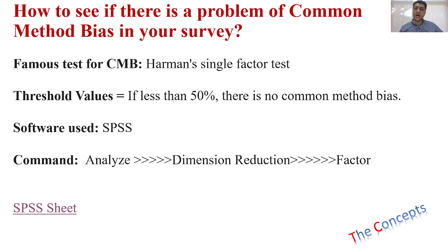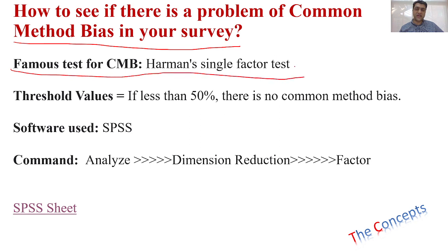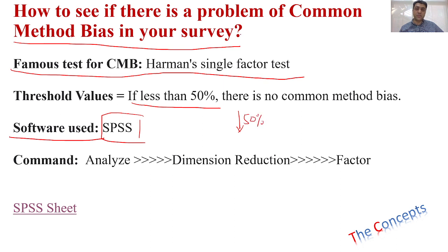To check for common method bias in survey-based data, the most famous test is Harman's single factor test, performed using SPSS. The threshold value to remember is that the percentage of variance should be less than 50%. If it is less than 50%, there is no problem of common method bias; if it is above 50%, there is a problem. In SPSS, go to Analyze, then Dimension Reduction, then Factor, and you will have options to configure the Harman's single factor test.